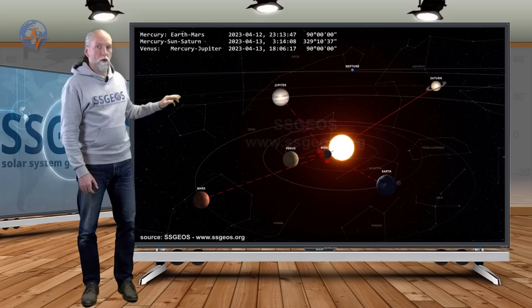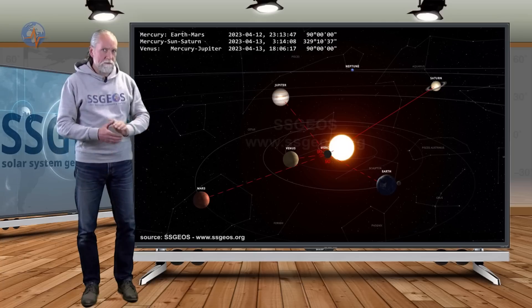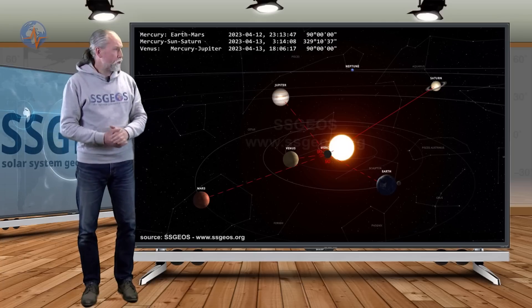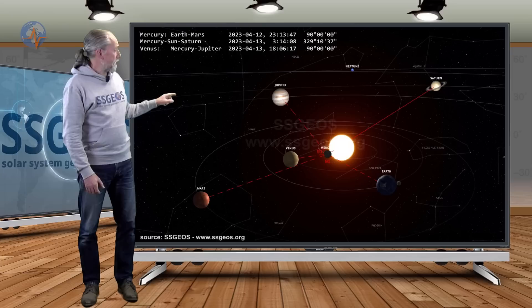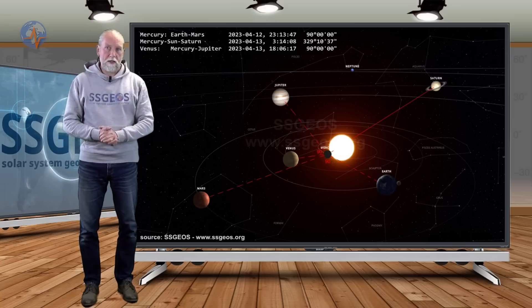One is with Mercury-Earth and Mars, and that actually happened yesterday night. And we also see that will be later today another 90-degree angle that is also with Mercury and Venus and Jupiter, that will be around 1800 hours today.